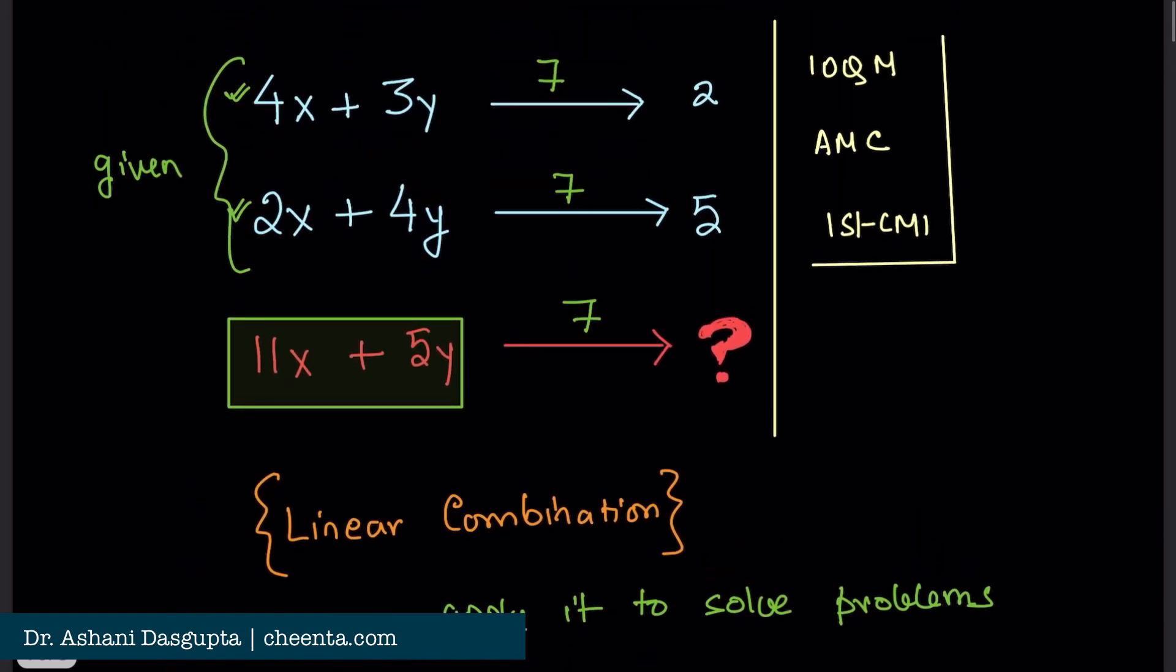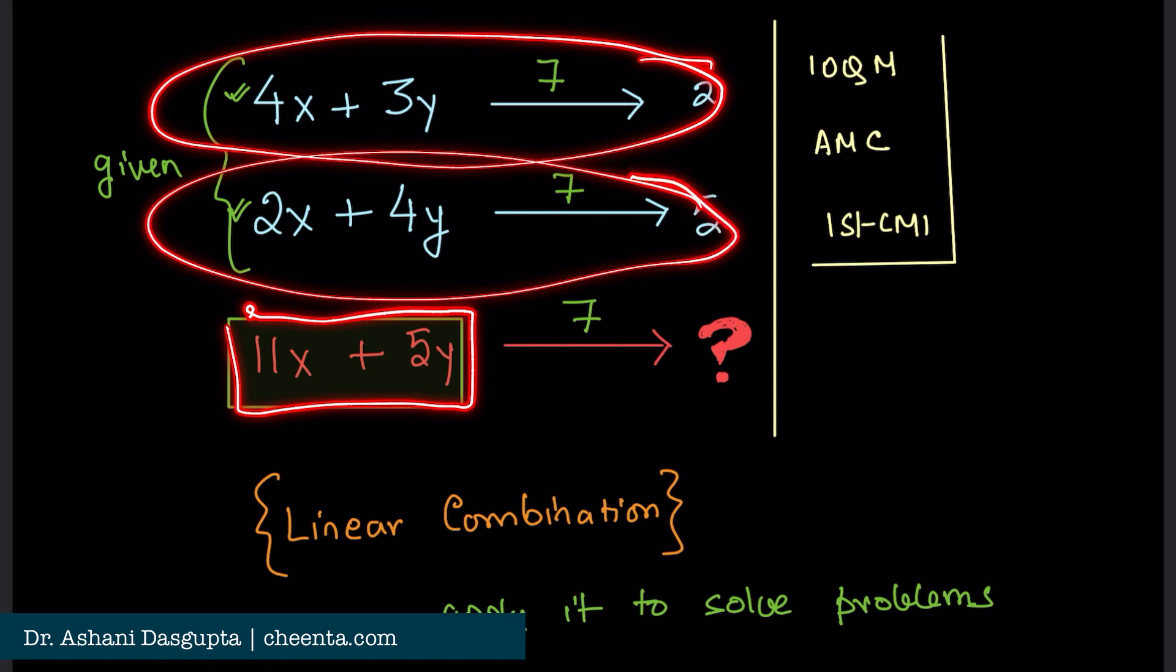So, now that we know what is linear combination, let's try to write this thing, 11x plus 5y, as a linear combination of these two.